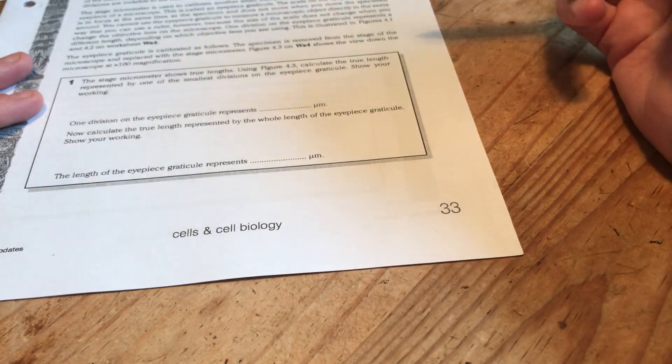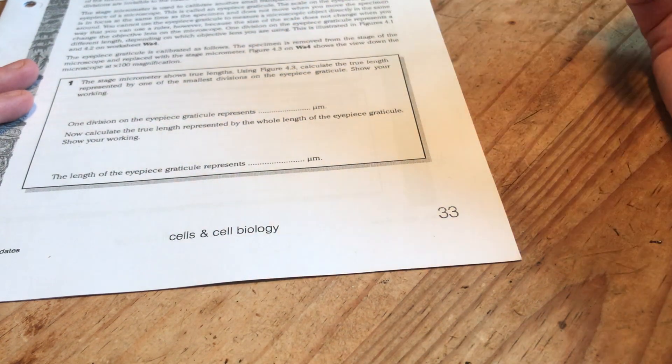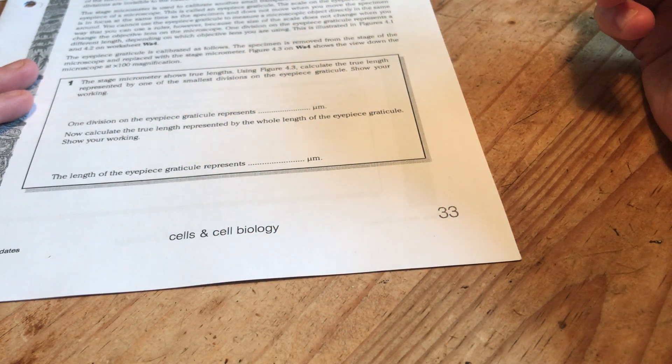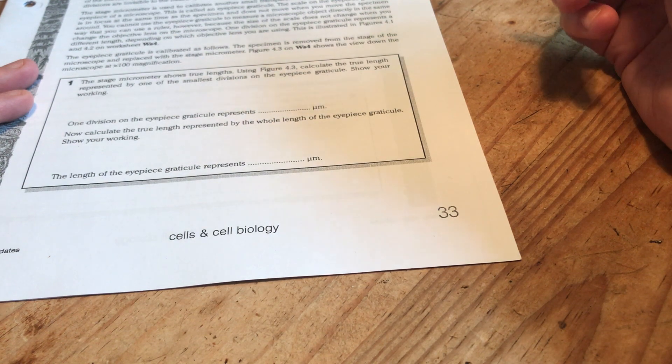So the stage micrometer shows true lengths. It's basically like a tiny tiny ruler. Using figure 4.3 calculate the true length represented by one of the smallest divisions on the eyepiece graticule. Show your working.